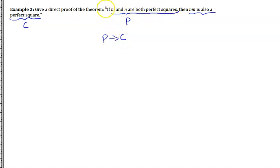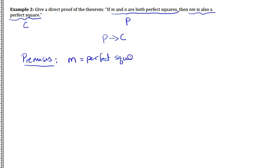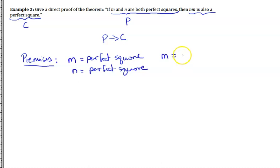Starting with the premises: M is a perfect square, and N is a perfect square. If M is a perfect square, I can write M as K squared, or K times K, where K is an integer. If N is a perfect square, I can write that as an integer squared as well.